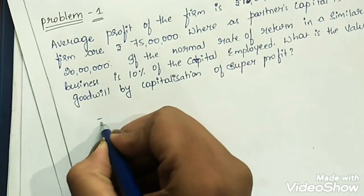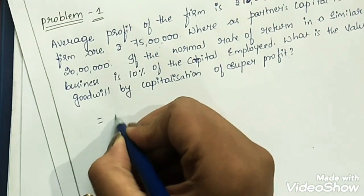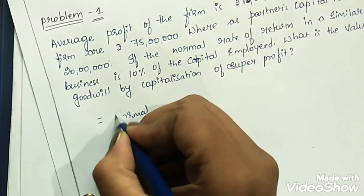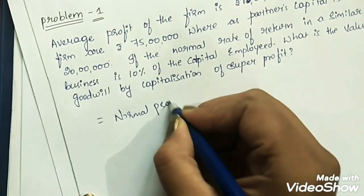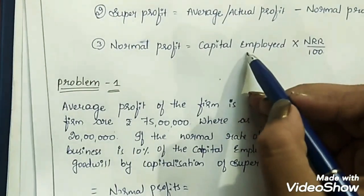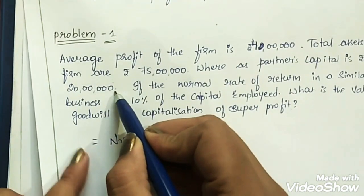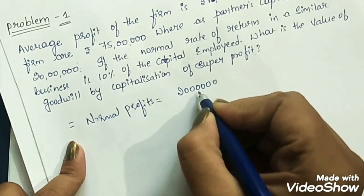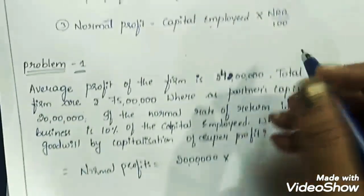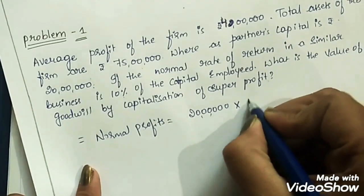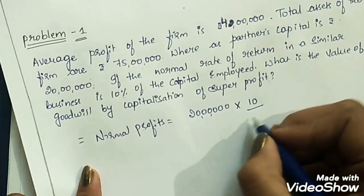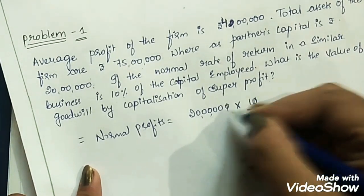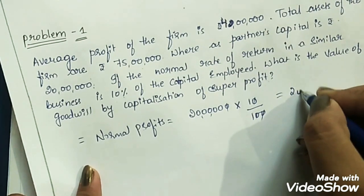First, we find the normal profit. Normal Profit = Capital Employed × NRR ÷ 100. Capital employed is given as ₹20 lakhs, and NRR is 10%. So: 20 lakhs × 10 ÷ 100 = ₹2 lakhs.